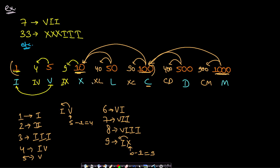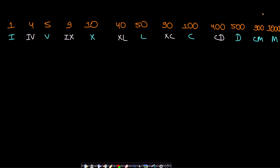We need all these notations in order to convert a decimal number to Roman. You cannot write I four times to represent 4 — that would be wrong. The complete list you need is: 1, 4, 5, 9, 10, 40, 50, 90, 100, 400, 500, 900, and 1000. All the derived values (4, 9, 40, 90, 400, 900) come from the original notations.